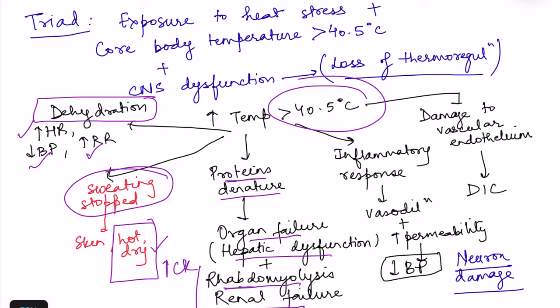When the body is exposed to extreme heat, heat shock proteins are activated. While protective in normal amounts, excessive activation becomes destructive, initiating an inflammatory response with vasodilation and increased vascular permeability. This causes fluid to move out of the vessels, further exacerbating the existing dehydration and decreasing blood pressure, ultimately leading to cardiovascular collapse.